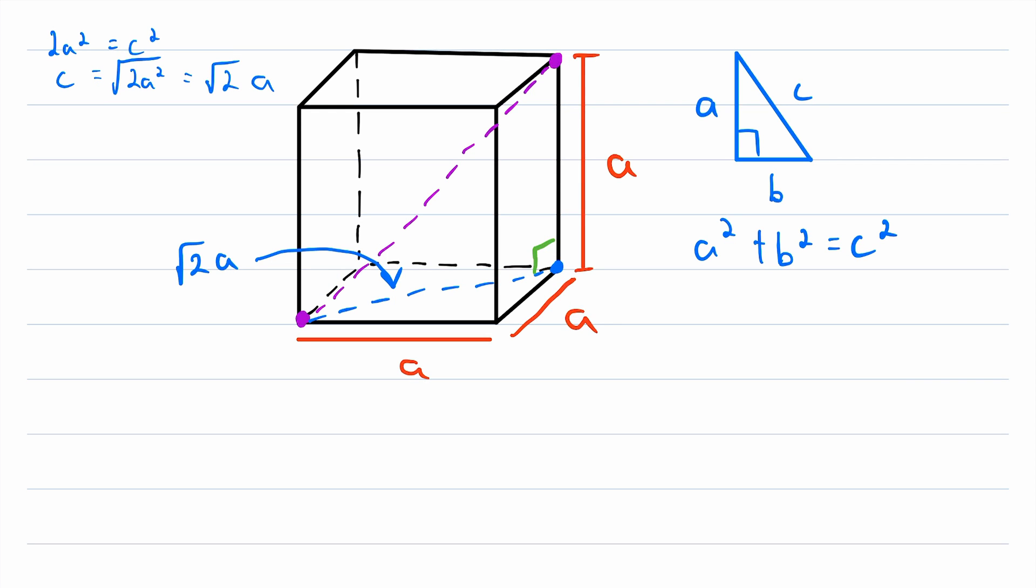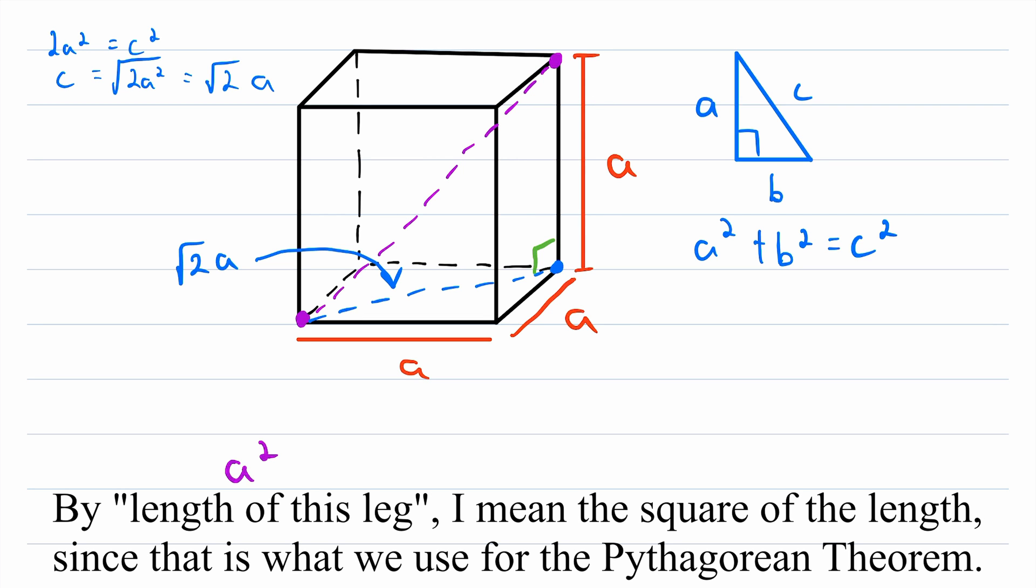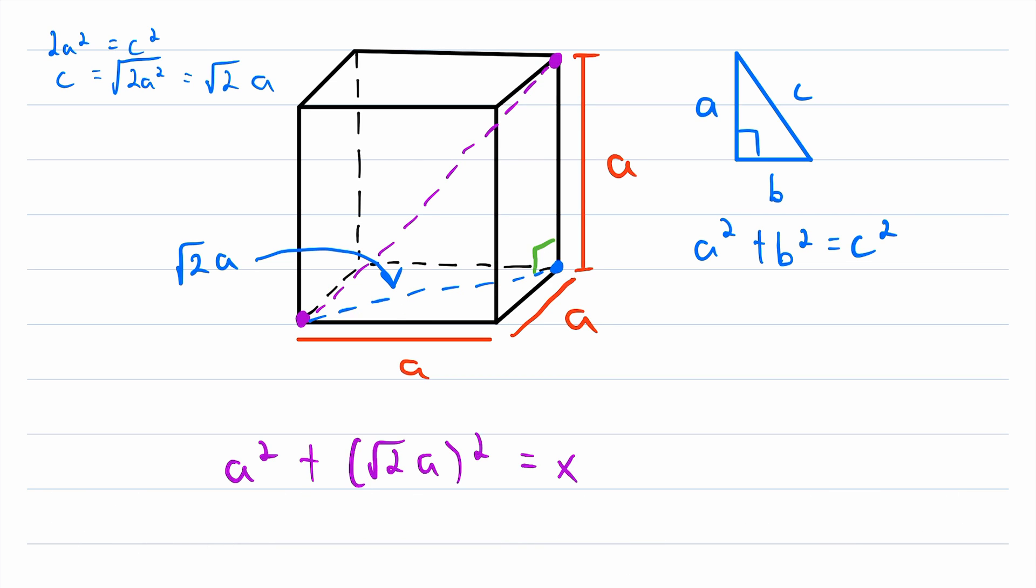So finally, by the Pythagorean theorem, we have that A squared, the length of this leg here, plus square root of 2 times A squared, which is the length of this leg here, is equal to, we'll call it x, so x squared. So now let's do a little bit of simplification. We have the square root of 2 times A squared. The square root of 2 squared is just 2, and A squared is just A squared. So we can rewrite this as 2 times A squared.